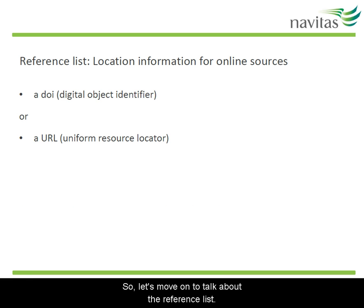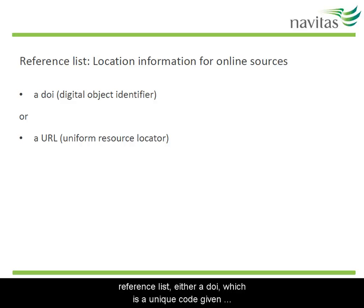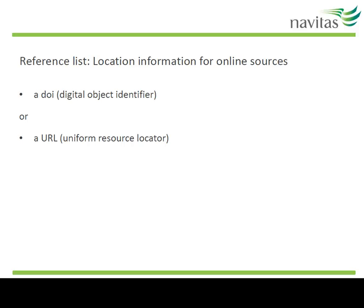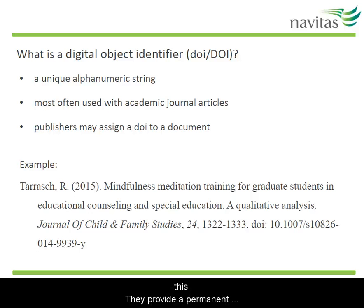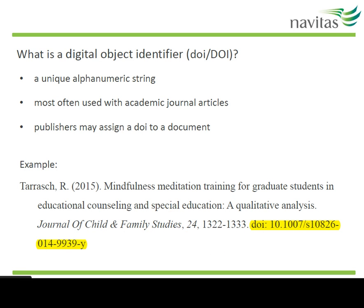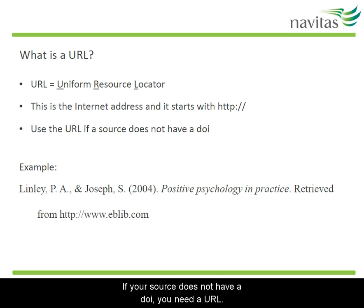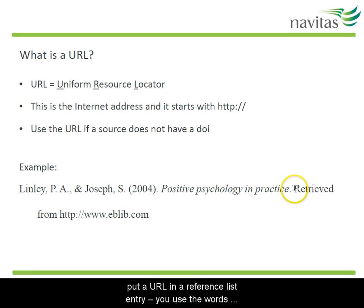Let's move on to talk about the reference list. All online sources need location information in the reference list — either a DOI, which is a unique code given to a document, or a URL, which is the website address of the document. DOIs are mostly given to journal articles and sometimes to e-books. When you try to use old links on the internet, often the link is broken and you can't find the document. The aim of DOIs is to avoid this — they provide a permanent link and identity for a document. This example shows how to put a DOI in a reference list entry. If your source does not have a DOI, you need a URL — that's the web address where you found the information. Here's an example of how to put a URL in a reference list entry. You use the words 'retrieved from' and then the URL.